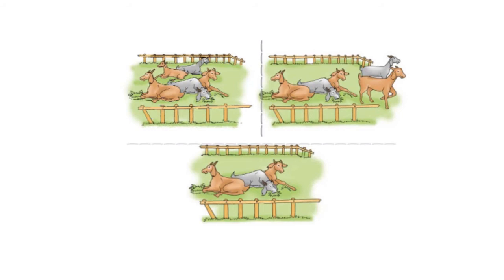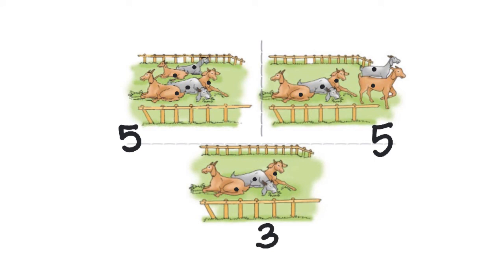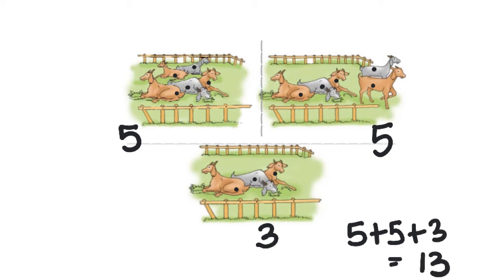In this picture, I see many goats. Let me count the number of goats. In this picture, there are 1, 2, 3, 4, 5 — five goats. And in this picture, there are 1, 2, and 3 — three goats. In total, I have 5 plus 5 plus 3, which is 13 goats in all.